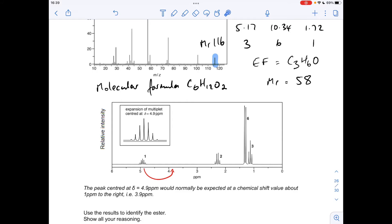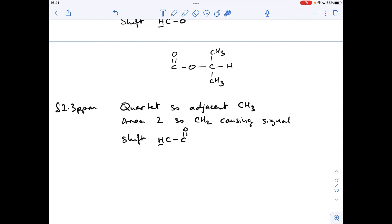Okay, so we'll move on to this signal now. So this is a quartet, so there's an adjacent CH3 group to the protons causing this signal. The area of 2 tells us that it's a CH2 group causing the signal. And the shift value is H to C to C double bond O. So that's the other part of the ester group. So I'll write that up now and I'll draw the little part of the structure from that. We've got a CH2 group bonded to that C double bond O, and adjacent to that is a CH3 group. So we've actually got the structure, because that's it.